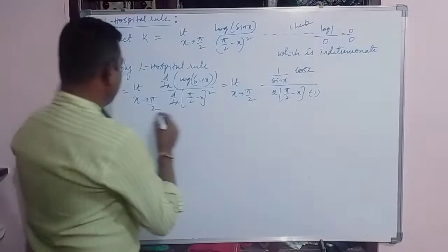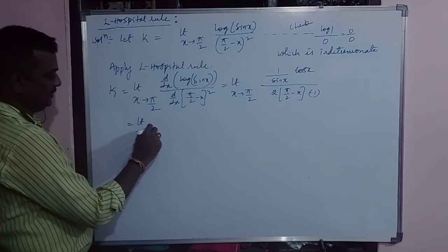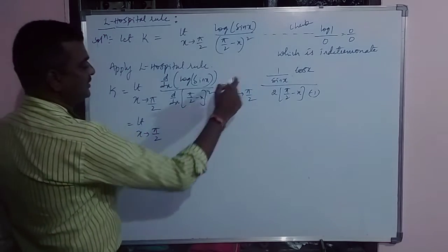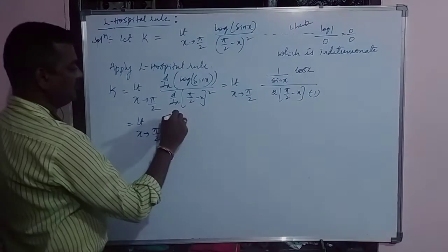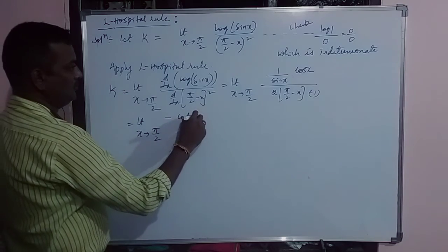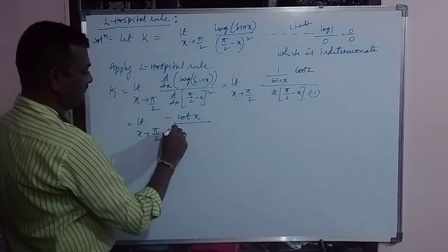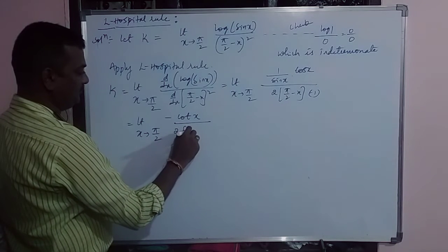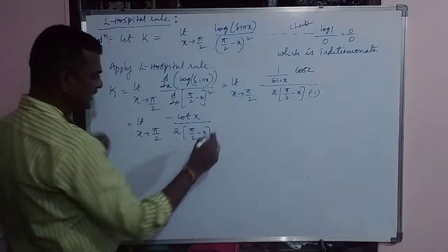So what we will get here? We will get limit as x tends to pi by 2. There is a minus sign here minus cos by sin x, cot. This minus sign I am writing in the numerator divided by 2 times of pi by 2 minus x. And check it.